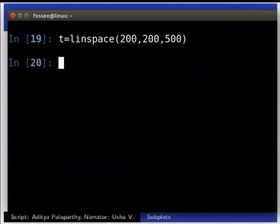Type T is equal to linspace inside brackets 200 comma 200 comma 500. Now, we have 500 values in T and each with value 200 kelvin.